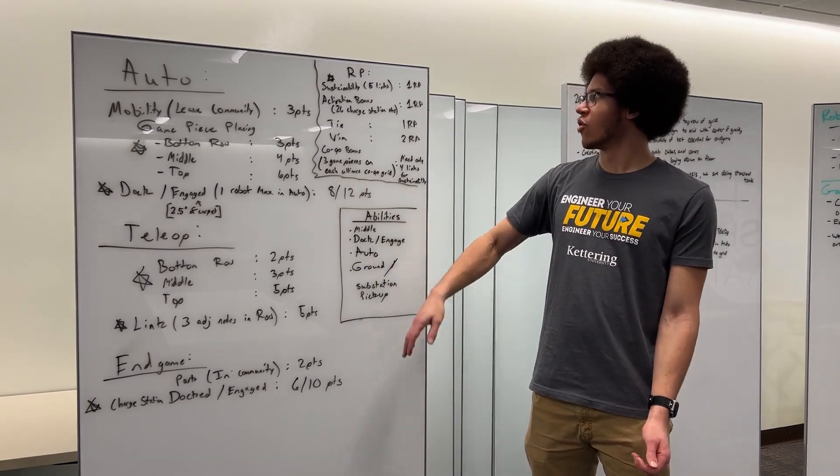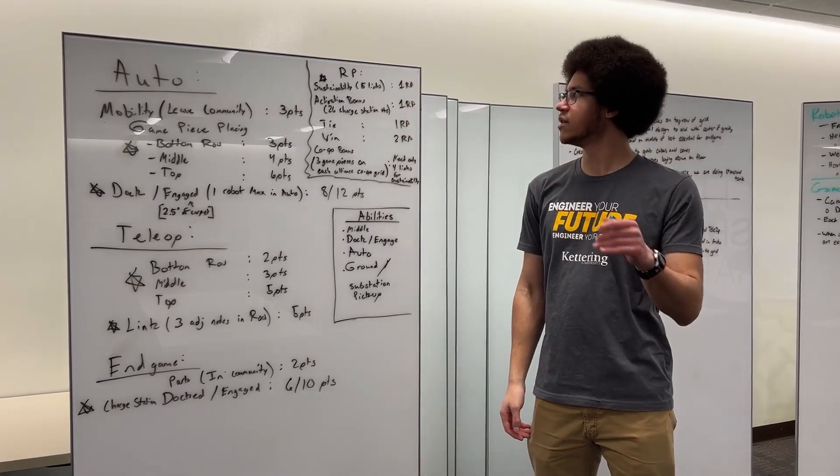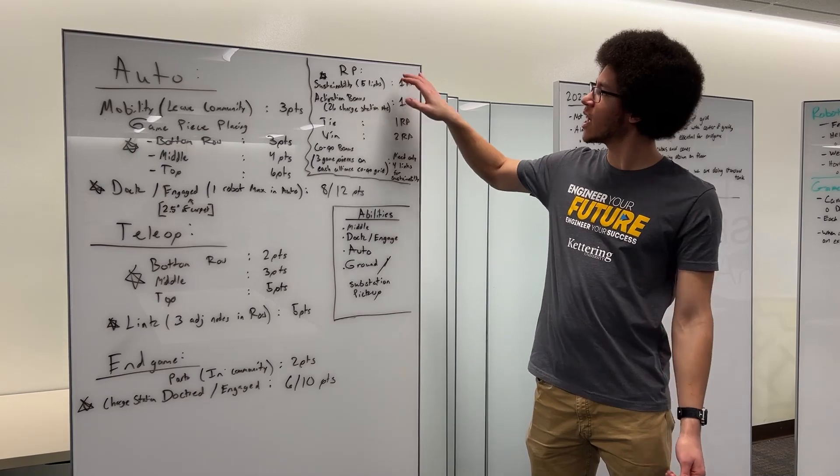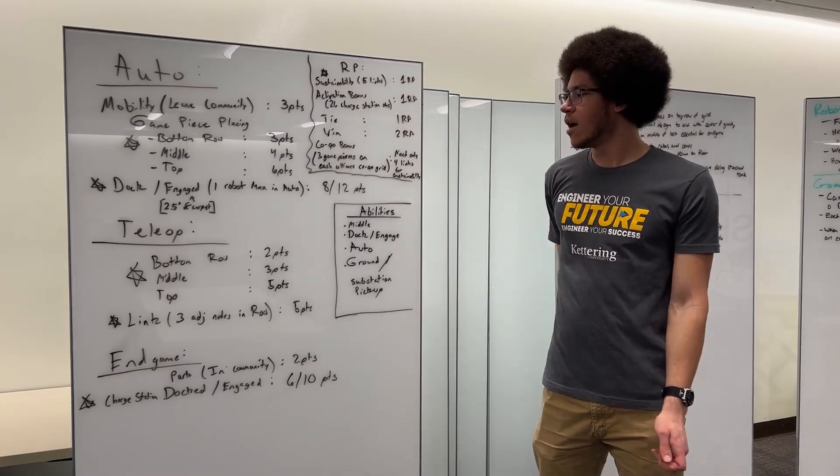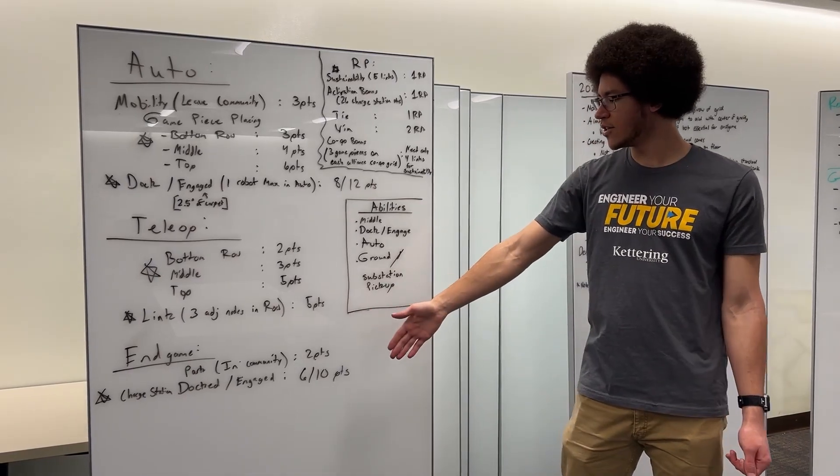And with that we're hoping to be able to score five links which will have to go across the competition zone, but we're hoping we'll still be able to accomplish it to get the one RP. Then for end game, again just docking and engaging for the points.